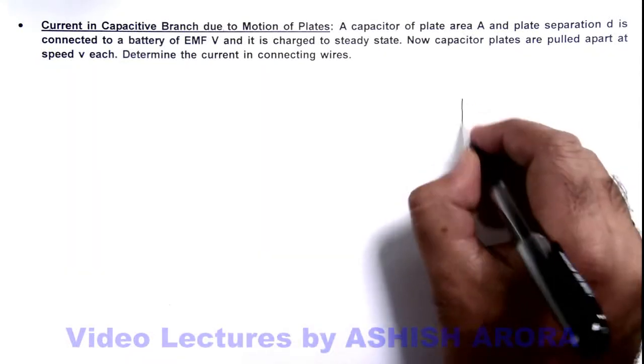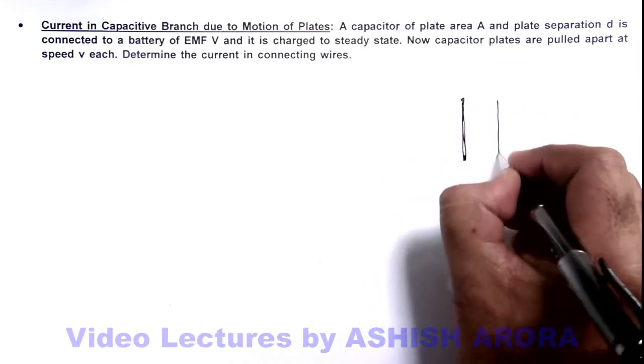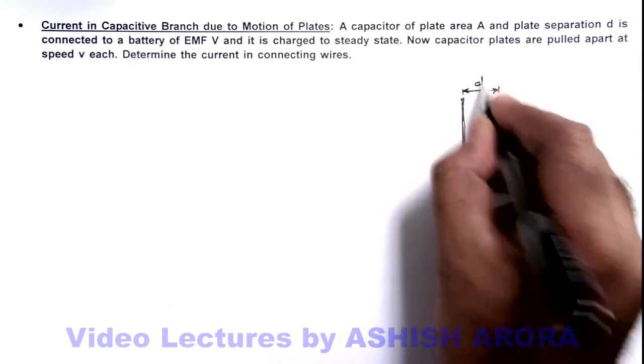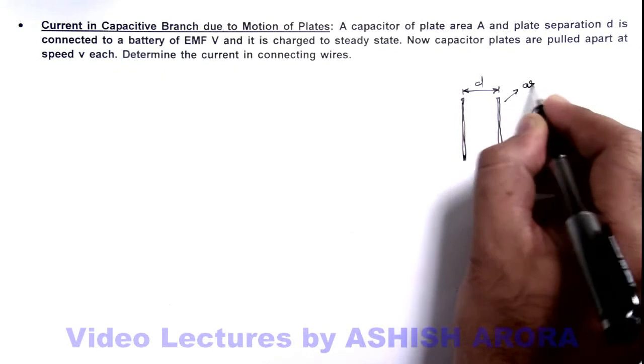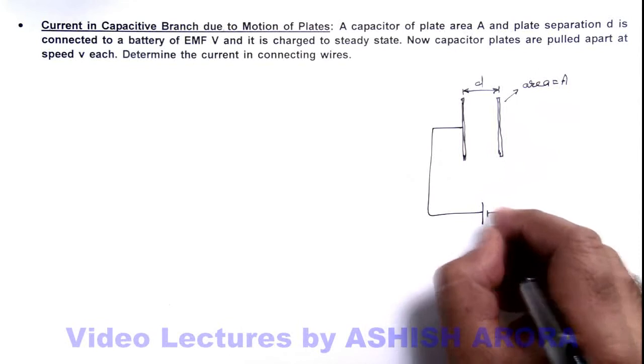Now if we draw the situation, this is our capacitor. These two plates are there which are having plate separation d, and the plate area is equal to A. It is connected to a battery of EMF V.